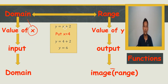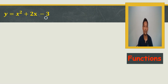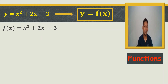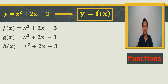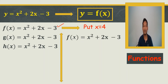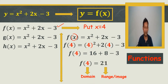For example, x is the domain and y = 6 is the image. Now using the equation y = x² + 2x − 3, we can write this as f(x). Functions can also be written as g(x) or h(x) — there are many ways to represent them. When I substitute x = 4 into f(x) = x² + 2x − 3, the answer comes out as 21. So 4 is the domain and 21 is the image.